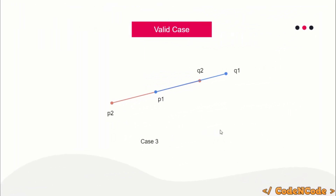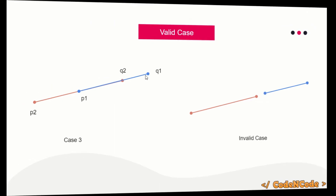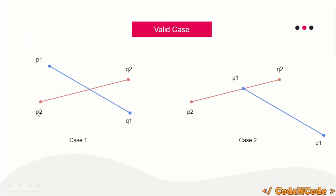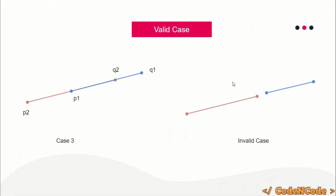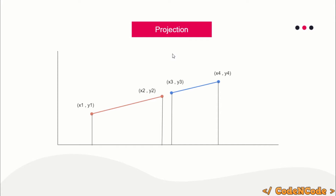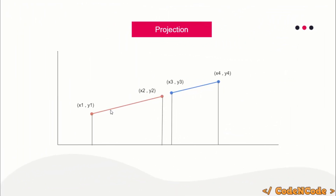That was cases one and two. Now what about case three? There is a third case where it is possible that all four points are part of the same line — all four points are actually collinear. Checking whether all four points are collinear is a valid test, but the answer is actually no, because even though all four points are collinear, they may not intersect. So the first test is to find out the orientation of each endpoint and see that they are different. The second test: if all four points are collinear, go for projection.